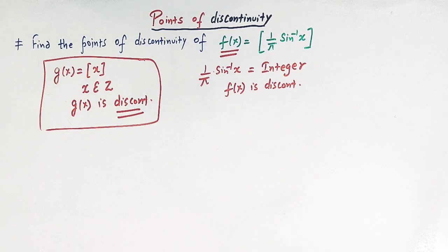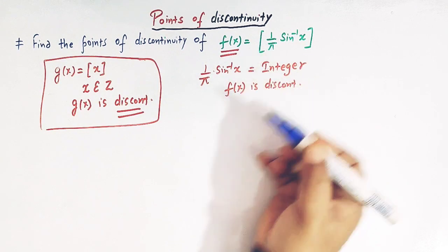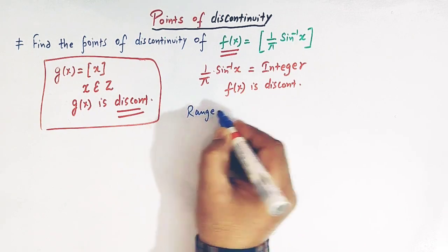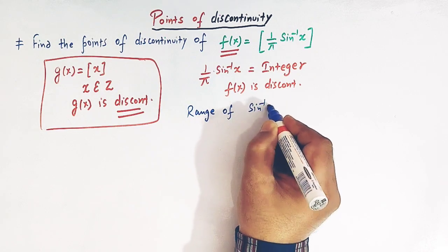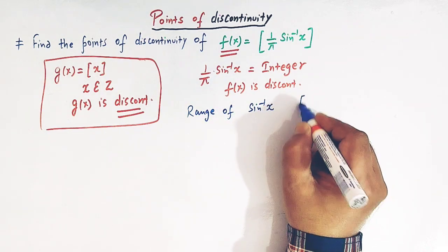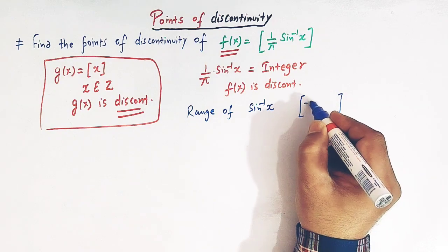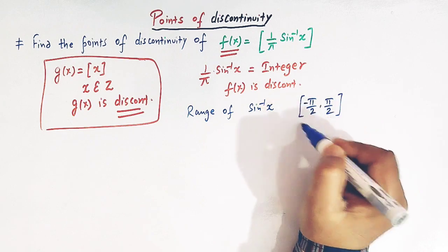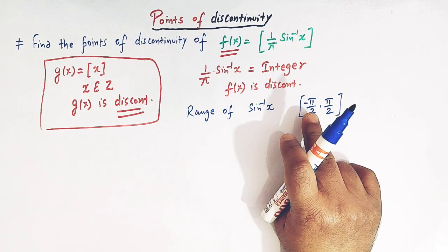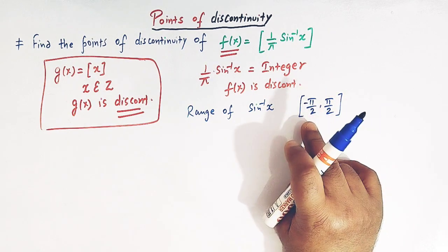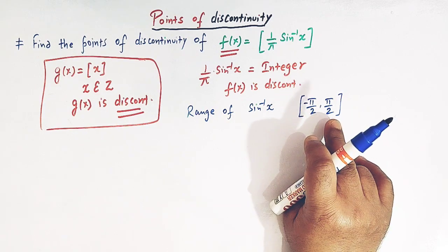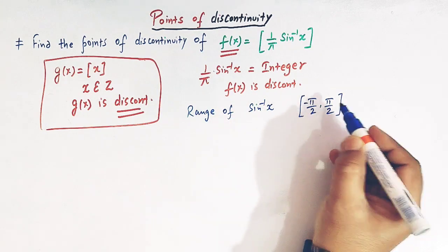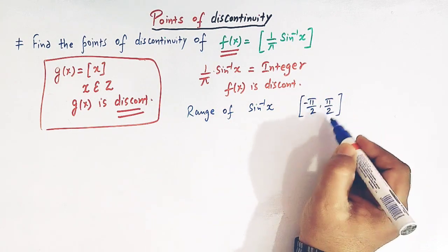From inverse trigonometric functions, we know that the range of sin⁻¹x is the closed interval [-π/2, π/2]. This is the principal branch, including both endpoints -π/2 and π/2.